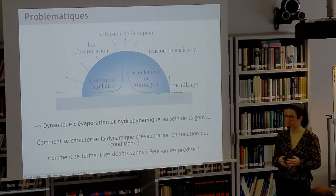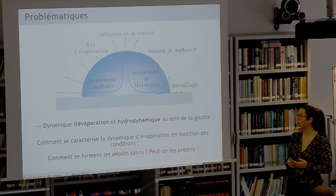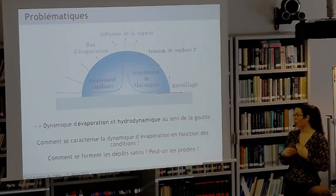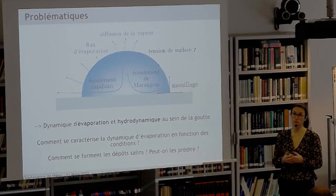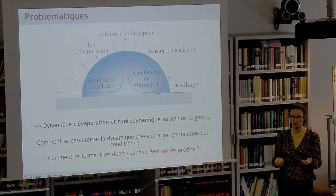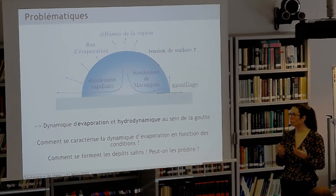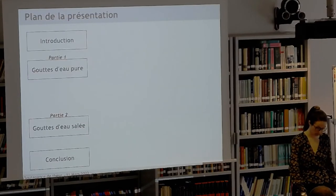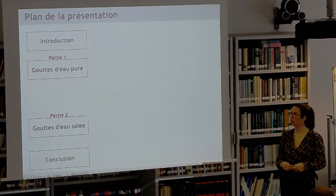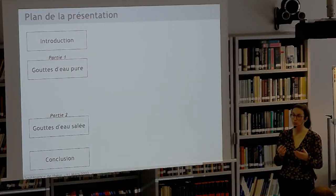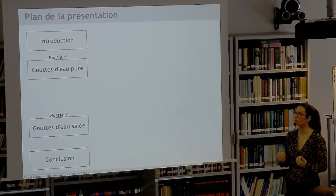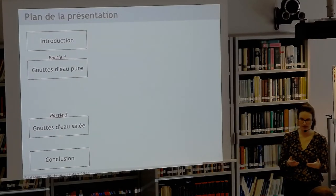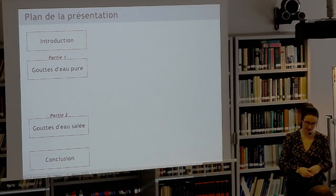Pour guider cette présentation, on se pose deux questions : comment se caractérise la dynamique d'évaporation en fonction des conditions — température, humidité, taille de la goutte, concentration en sel ? Et comment se forment les dépôts salins, peut-on les prédire ? Pour répondre, on procède en deux étapes : d'abord des gouttes d'eau pure, puis des gouttes d'eau salée, constituant un système de complexité croissante. Dans chaque partie, on mène une étude expérimentale et une étude numérique, les études expérimentales ayant été réalisées en collaboration avec des stagiaires.